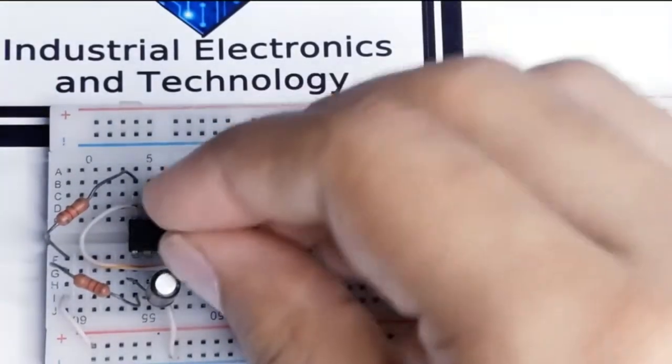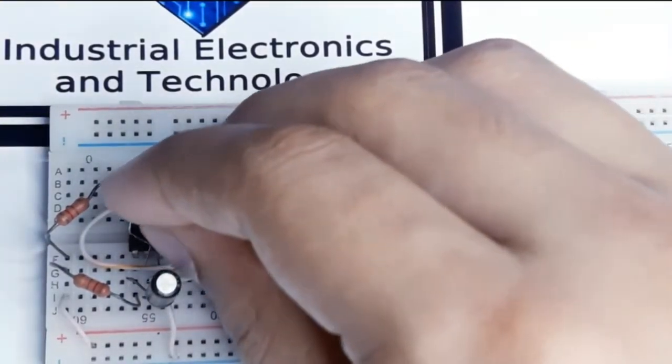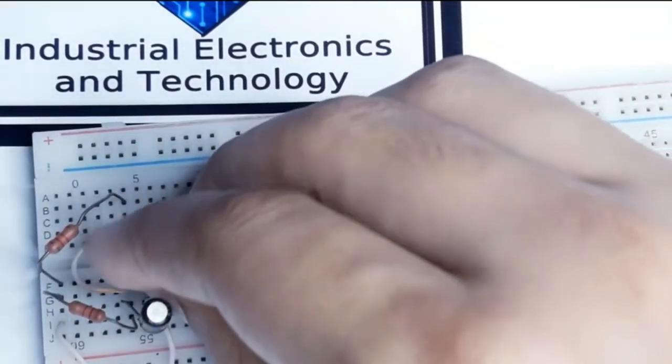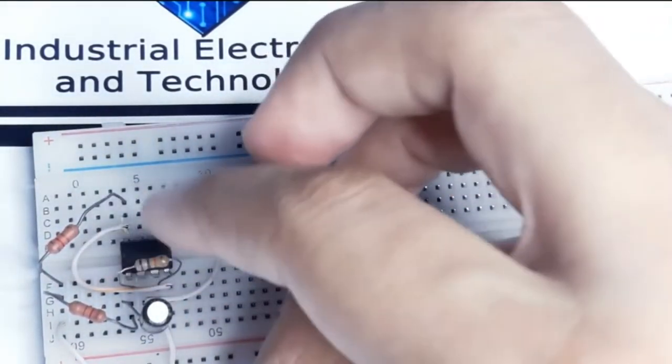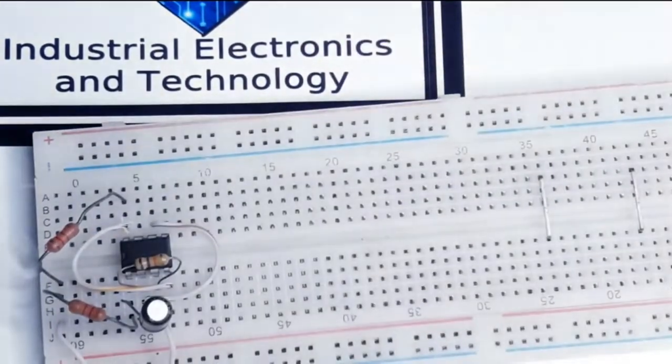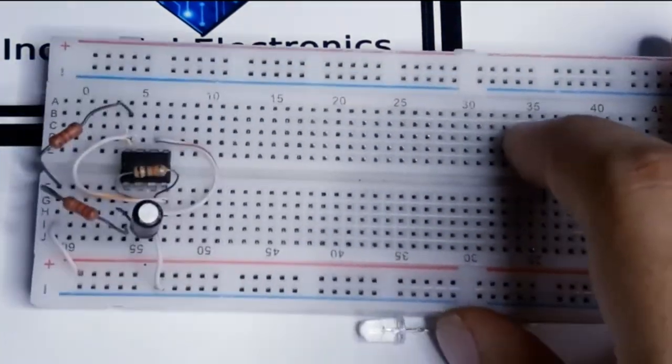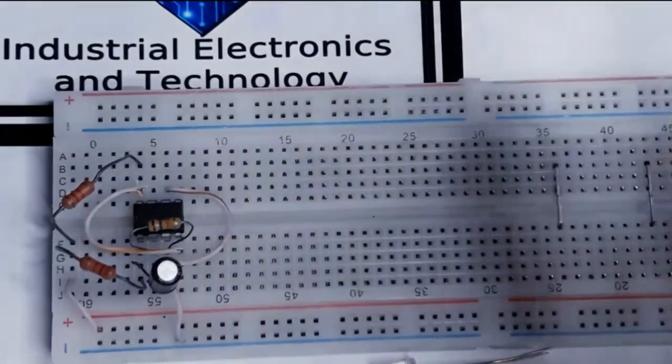The 18k resistor will go to pin number two and three. You can increase or decrease this resistor if you want to adjust the delay interval between the switching of the LEDs.